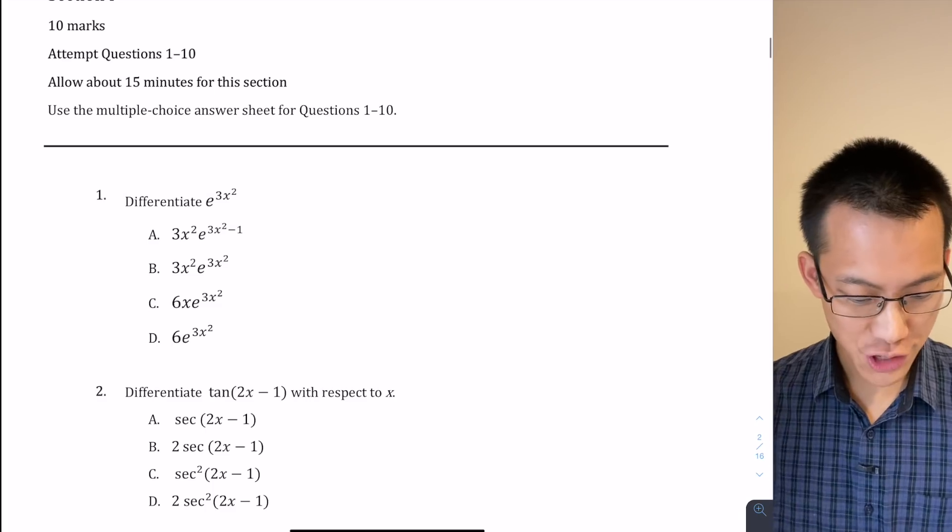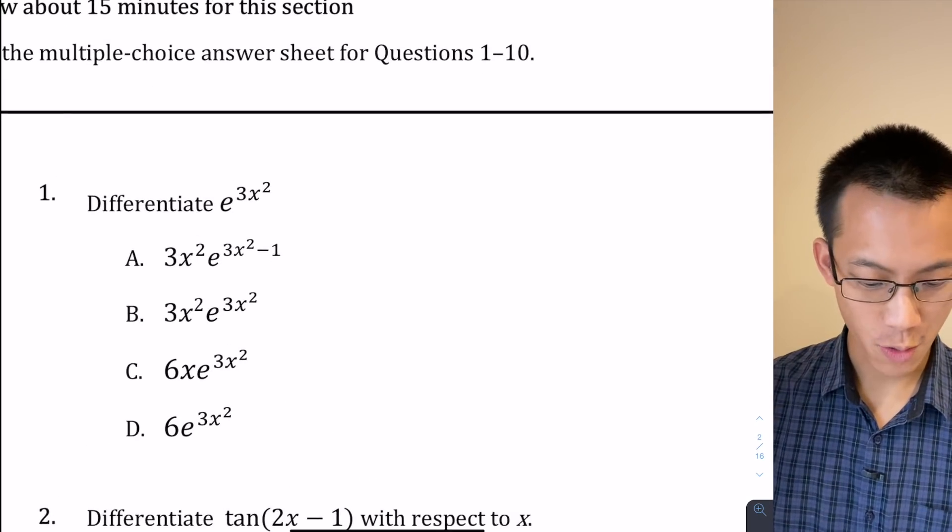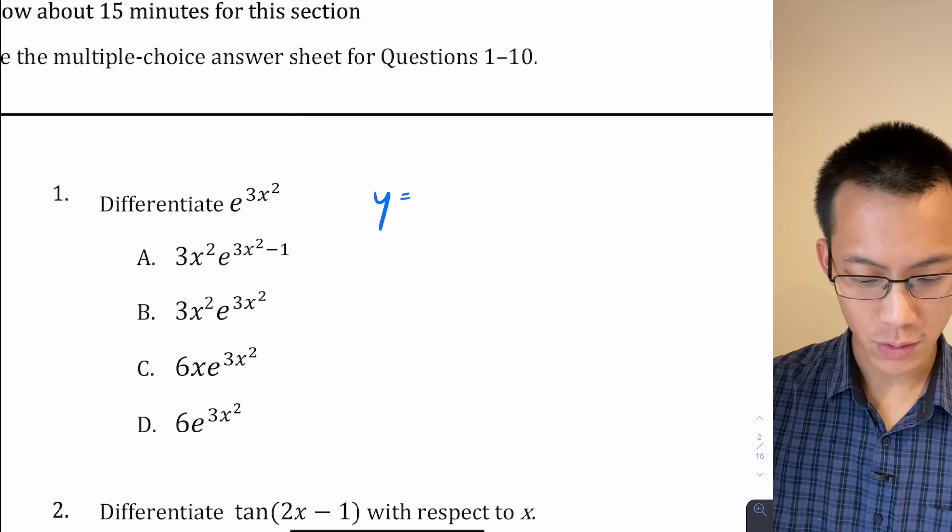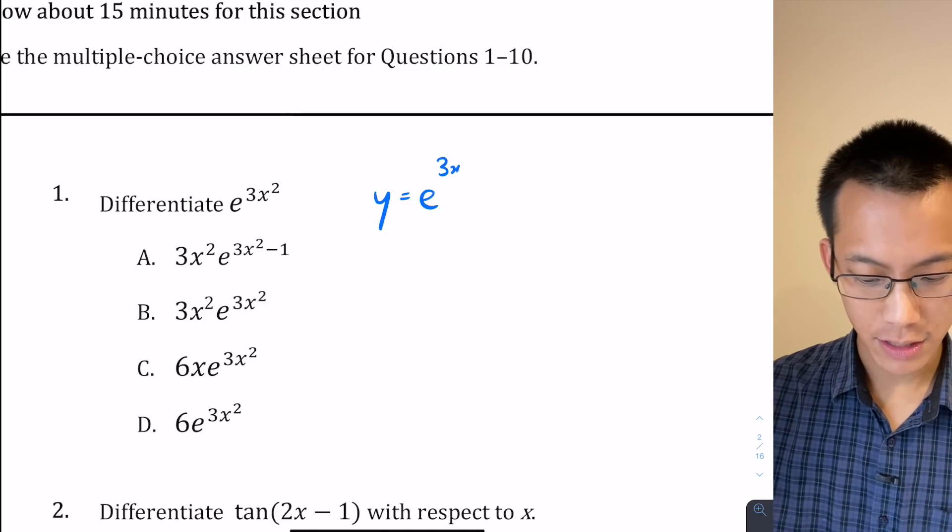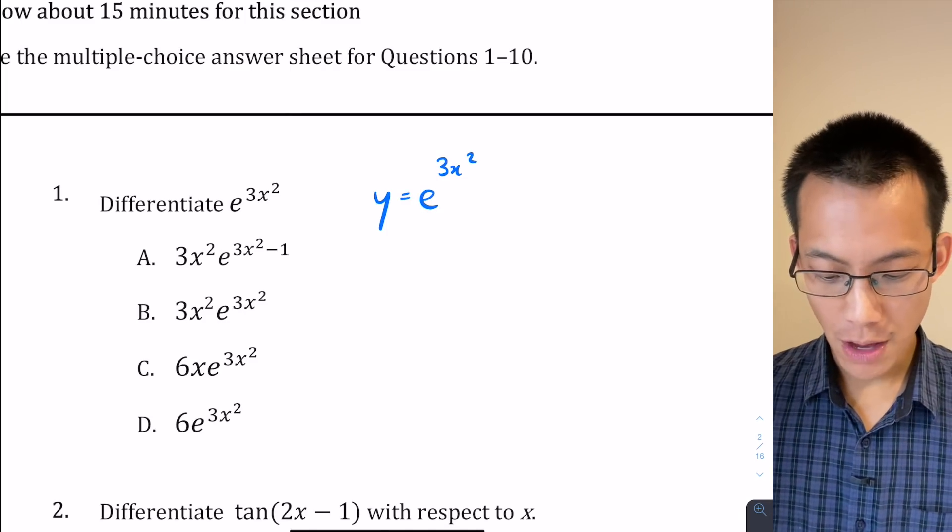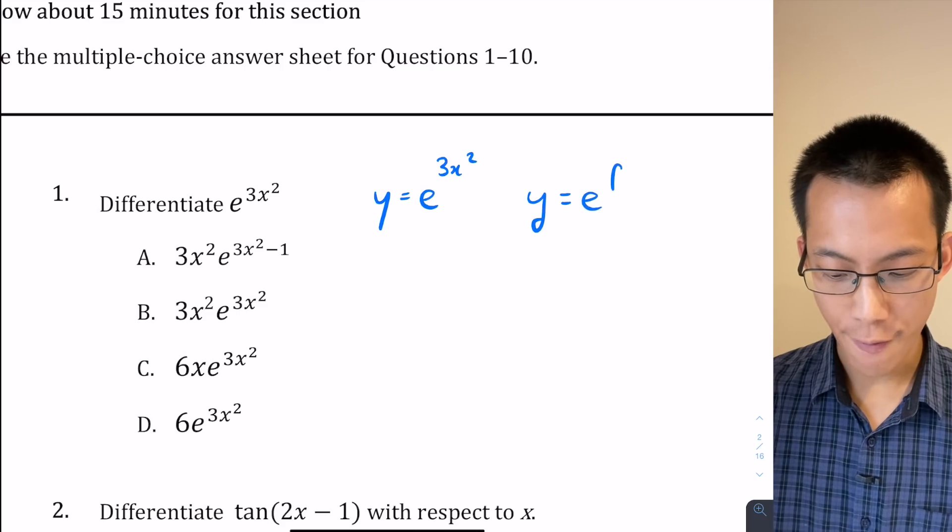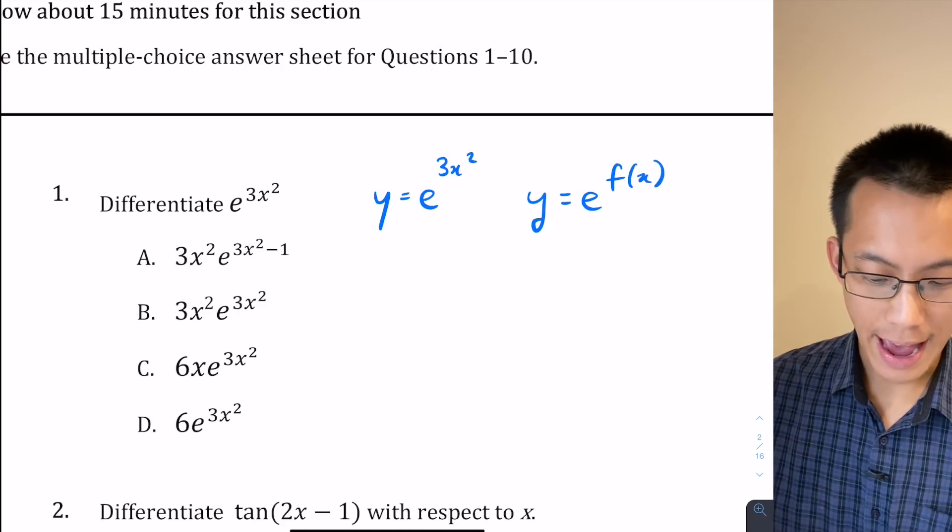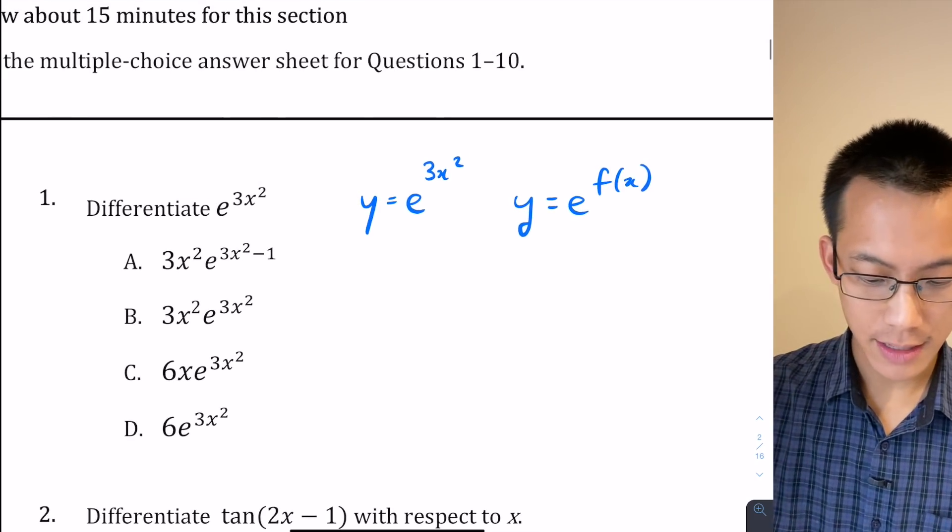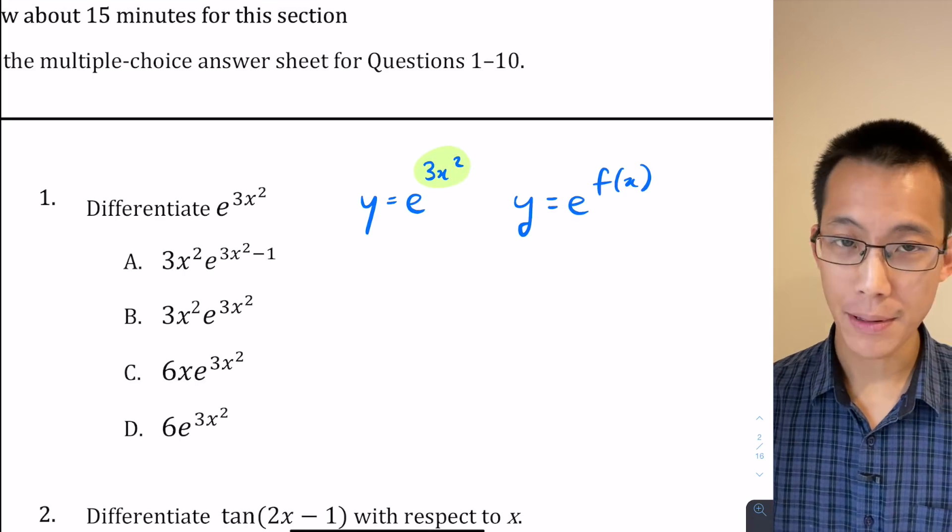Question one says differentiate e to the power of 3x squared. So what we've got here, this function y equals e to the 3x squared, it's of the form y equals e to the f(x), where our f(x) in this case is this 3x squared up in the index there.